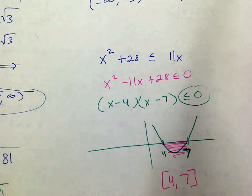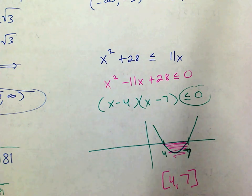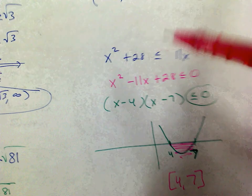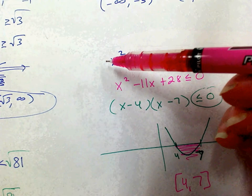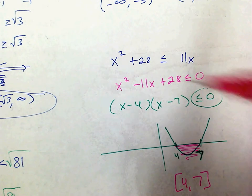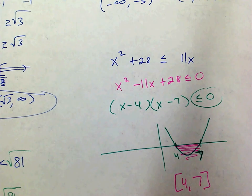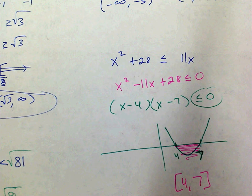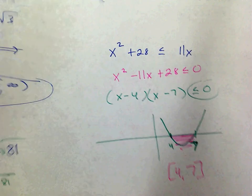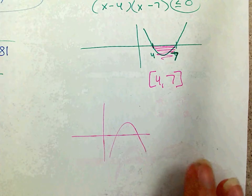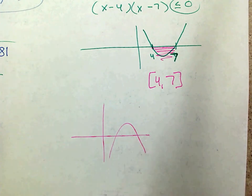The only other situation you might find yourself in is if the x squared is negative — then you'd have a quadratic that opens down. In that case, just identify whether the parabola is positive or negative. You can always move it to make it positive and deal with it from there.